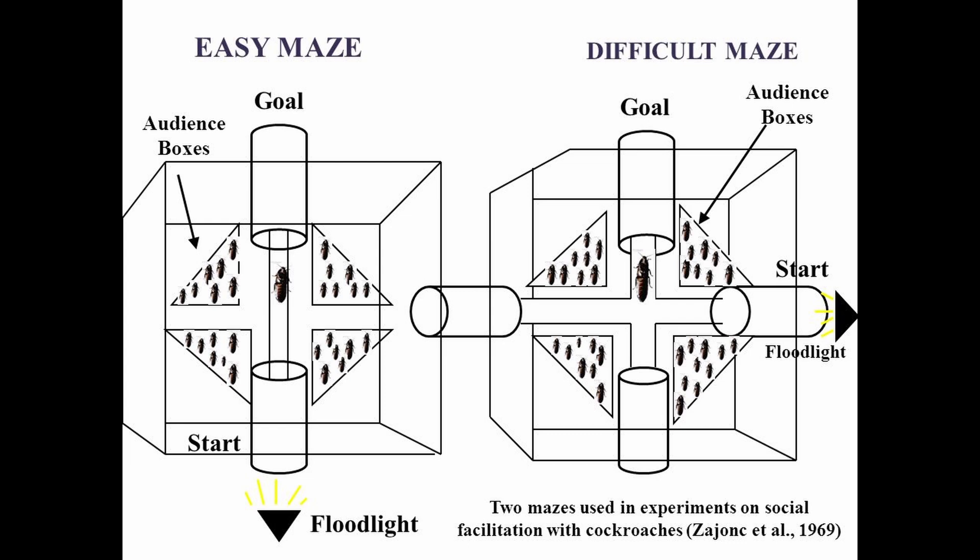The results of Zajonc's experiments were quite clear: when we perform a simple, familiar task in front of a crowd or with competitors, we perform better — the presence of a social group facilitates our performance. However, when we perform complex tasks that we're not familiar with or have had little practice with, our performance decreases. This is what Zajonc called social inhibition. So you can either have social facilitation or social inhibition.